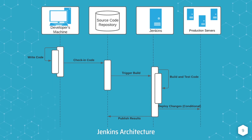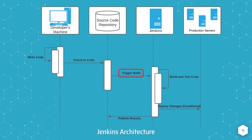This sequence diagram outlines the software development workflow, primarily focusing on the role of Jenkins. To begin the sequence, the developer writes code, and when they feel like their code is ready to be reviewed and tested, they check that code into the source code repository — a tool like GitLab, GitHub, or Bitbucket. When the developer checks in their code to the repository, this should trigger a build in Jenkins.